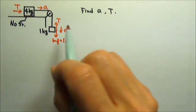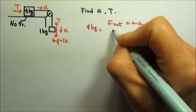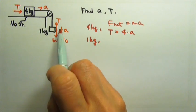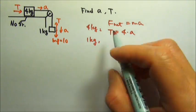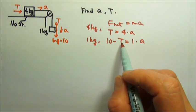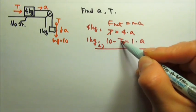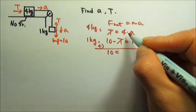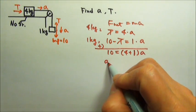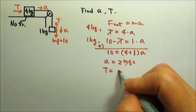The force equation for the 4 kg box is: net force equals ma. There is only one force in the horizontal direction, so T = 4a. For the 1 kg box, the acceleration goes down, so the downward force is bigger: mg minus T = 1a. We have two equations for our two unknowns, T and a. We can stack and add them so the tension cancels: 10 = 4a + 1a = 5a. So acceleration is 2 m/s² and tension is 8 newtons.